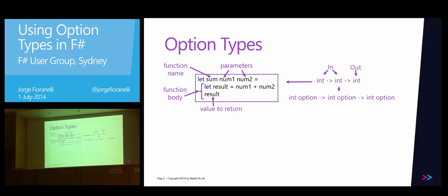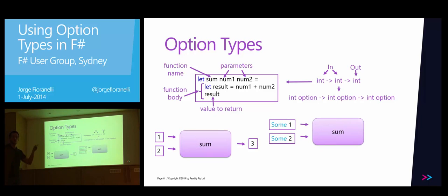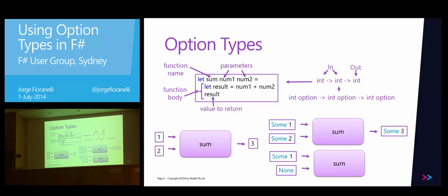What we really want to do is change this function to allow us to pass options. This is basically adding two numbers. Now we want to extend it to receive options as an exercise so we can see how the code changes. The current version of sum receives two integers and returns an integer. What we want is the possibility of sending two some-of-integers and returning another some of that. If we send none as one of the parameters, we'd expect to get a result of none.